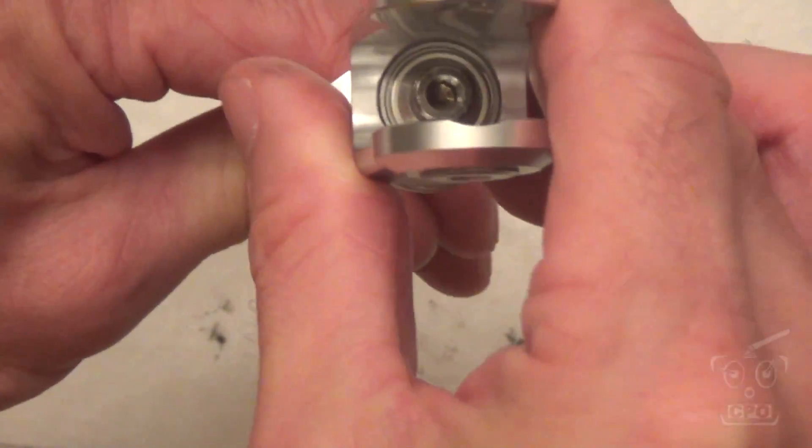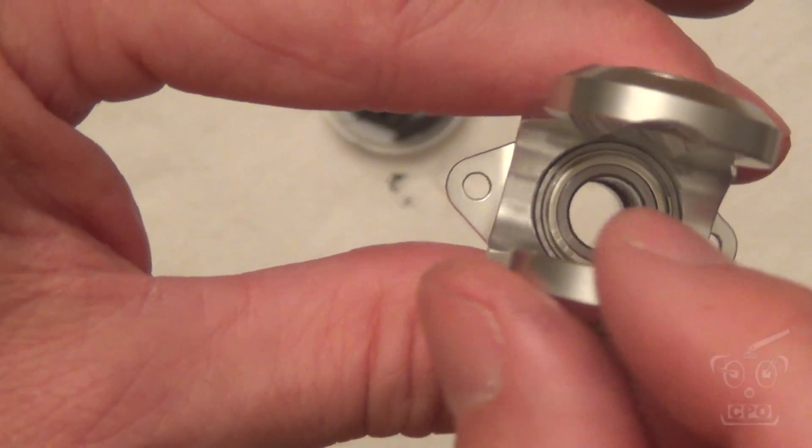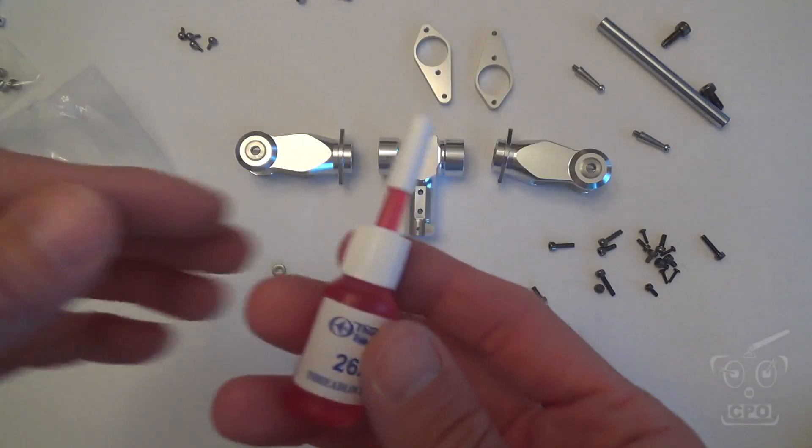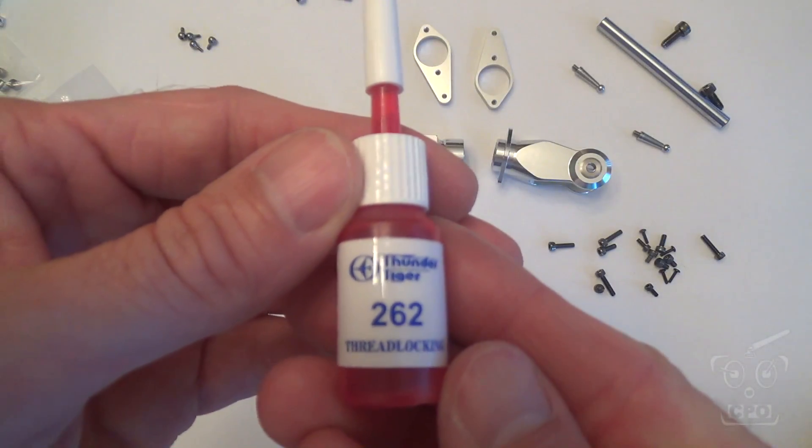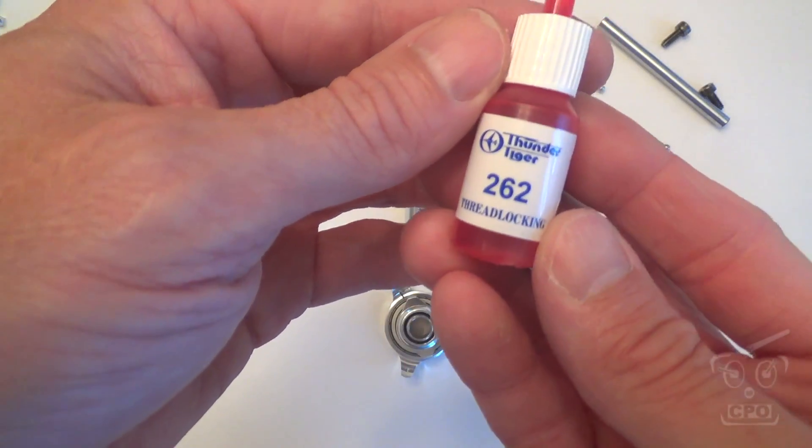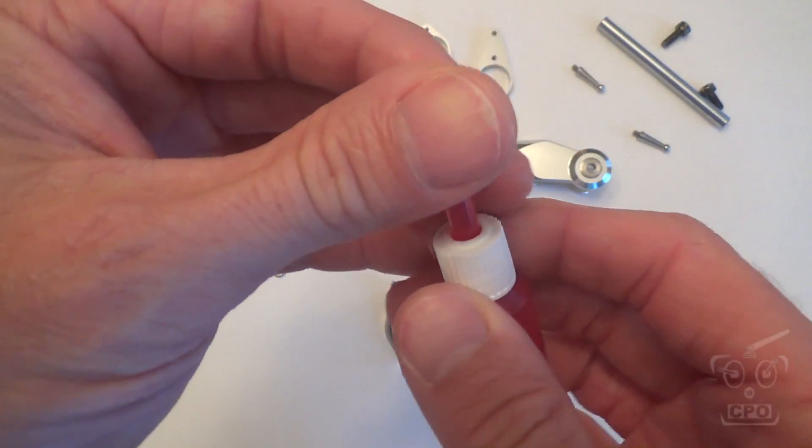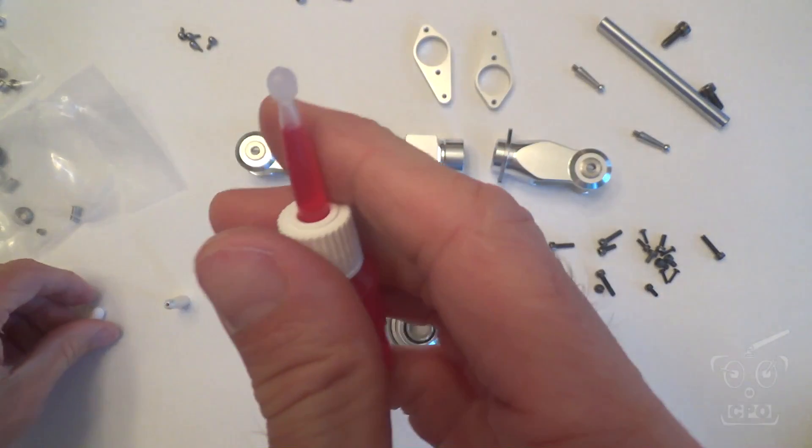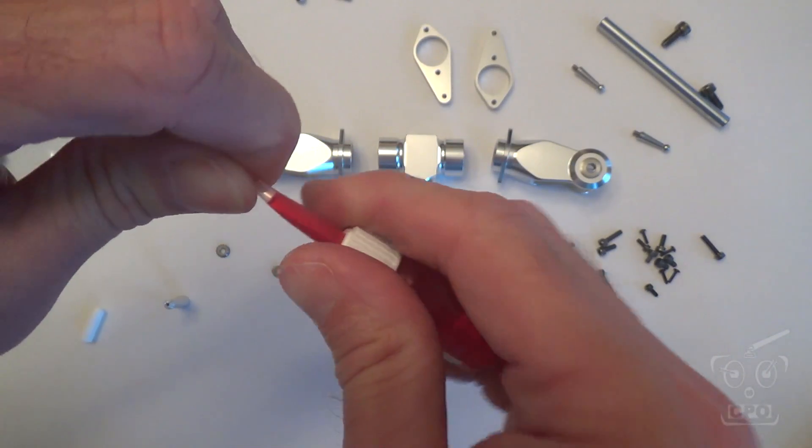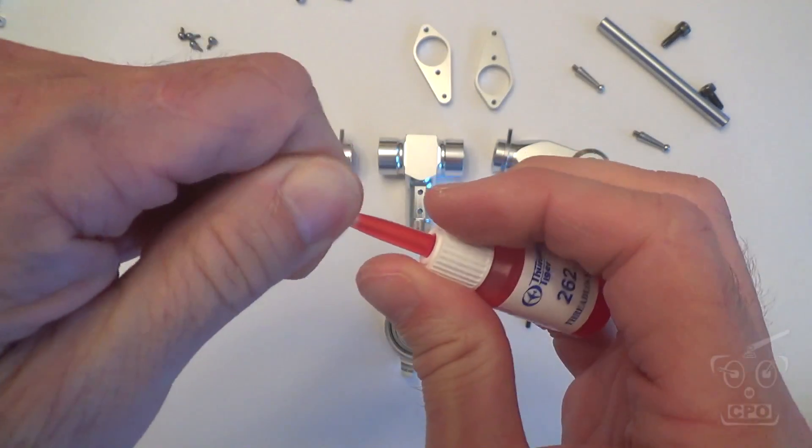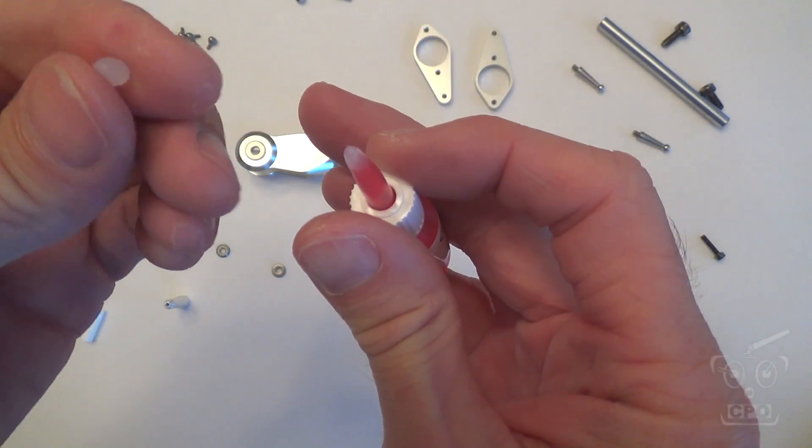Now I am using this 262 red thread locker that comes in the kit. Turns out this is a perfect thread lock for helis in general. And matter of fact, I'm going to begin using this for pretty much everything.